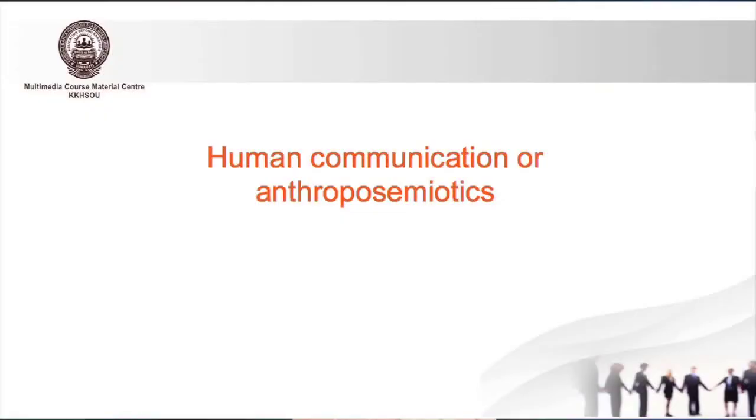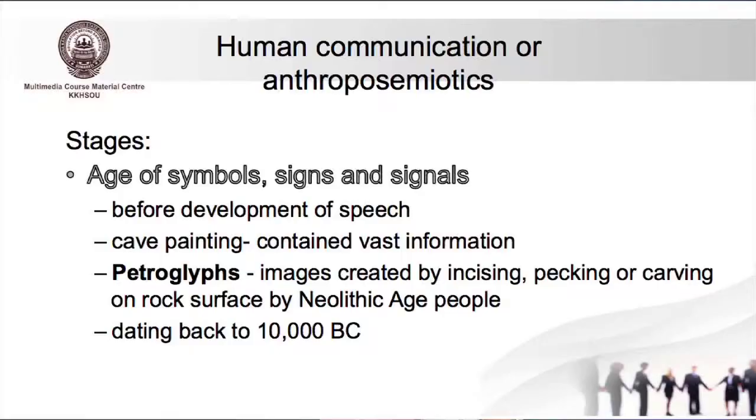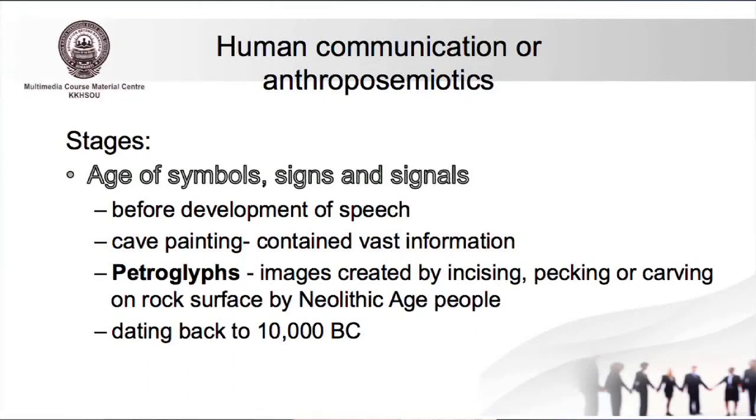There is one particular term called Anthroposemiotics — a term given to the entire study of communication that takes place among human beings, how the human communication system evolved. This is also known simply as human communication. Human communication passed through many stages to come to the stage we have today. The first stage is the age of symbols, signs, and signals.